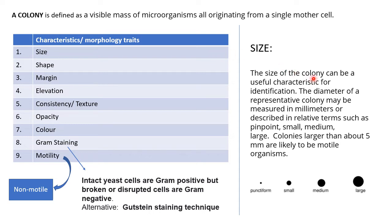Size of a colony can be a useful characteristic for identification, as each yeast culture will show a different size of colony formation. The diameter of a representative colony may be measured in millimeters or described in relative terms such as pinpoint, small, medium, or large. Colonies larger than about 5 mm are likely to be motile organisms, but that is the case in bacteria.